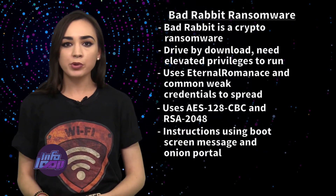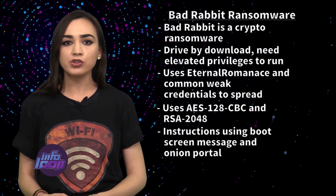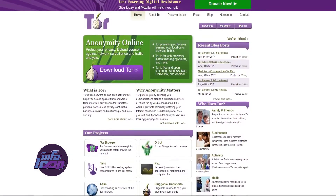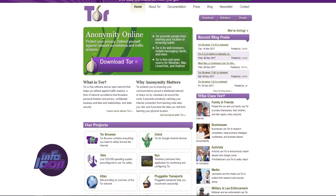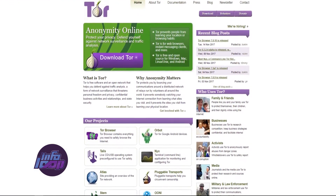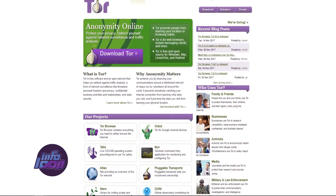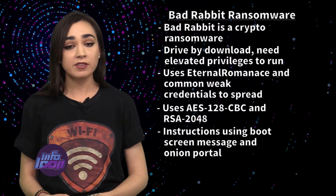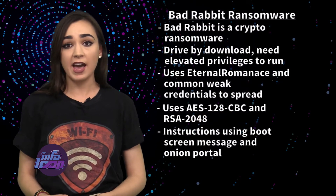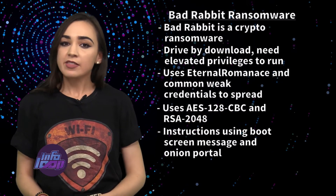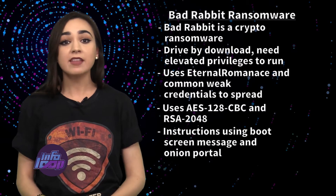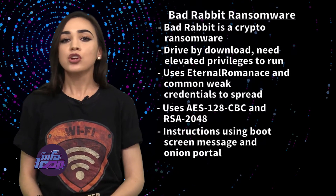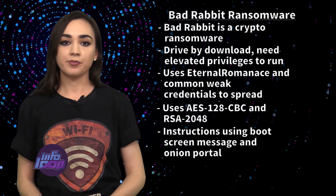After doing all this, Bad Rabbit reboots the system, which then boots using the modified bootloader. It then directs the victim to visit a website hosted on the Tor network. The victim is supposed to pay the ransom and send the personal installation key to the hackers. The hackers will then decrypt the string and send the AES decryption key, termed as password, to the victim.